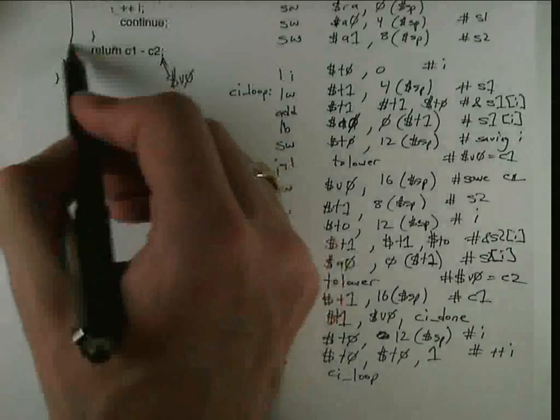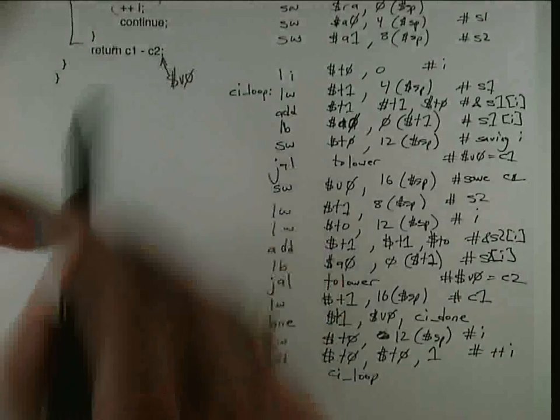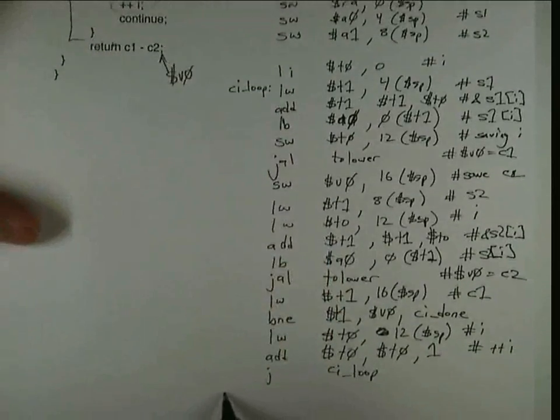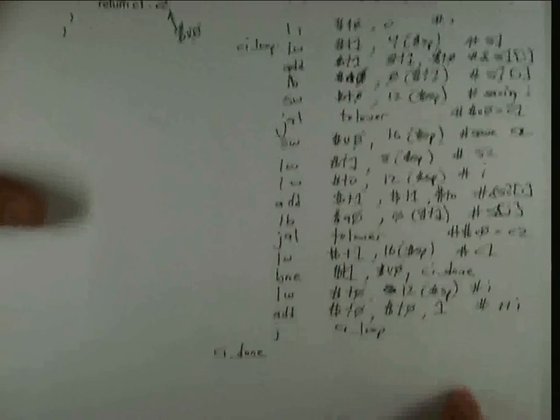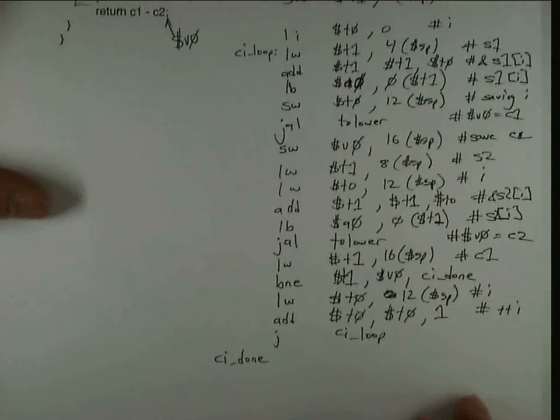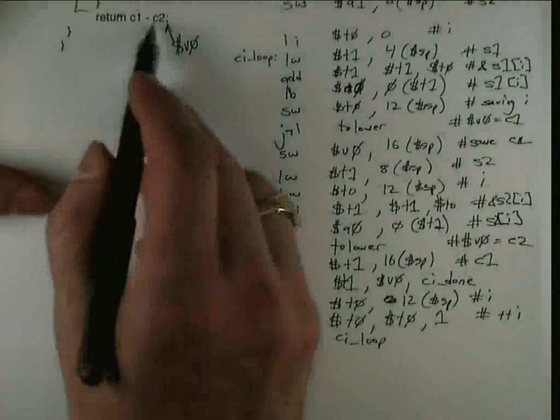So we've handled the code up to here. Now we have to handle the return case, which is CI done. And we're returning C1 minus C2.